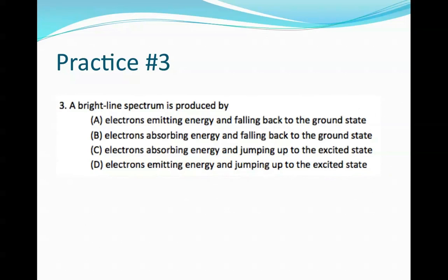Alright, a bright line spectrum is produced by... Remember, bright line spectrums have to come from energy being emitted, and this happens when the electrons fall back down to the ground state, so choice A.